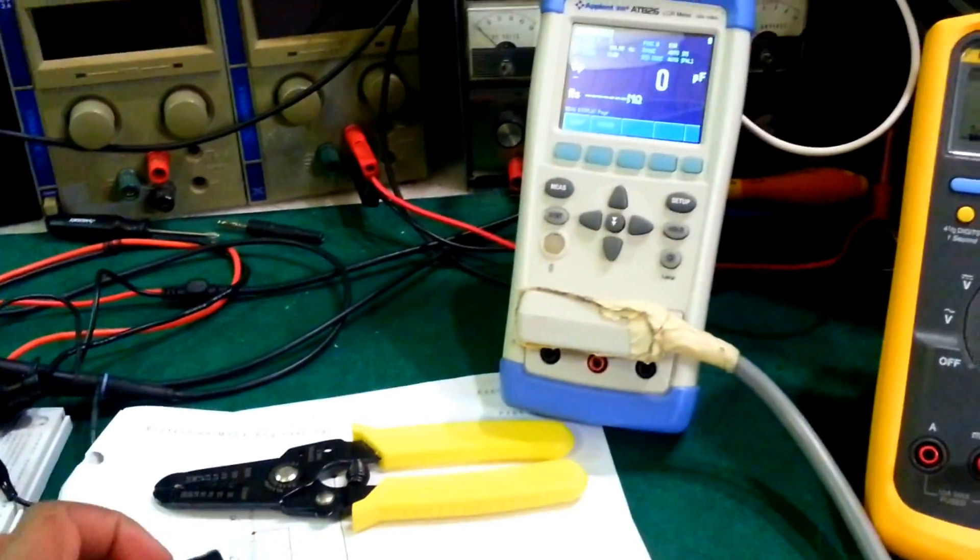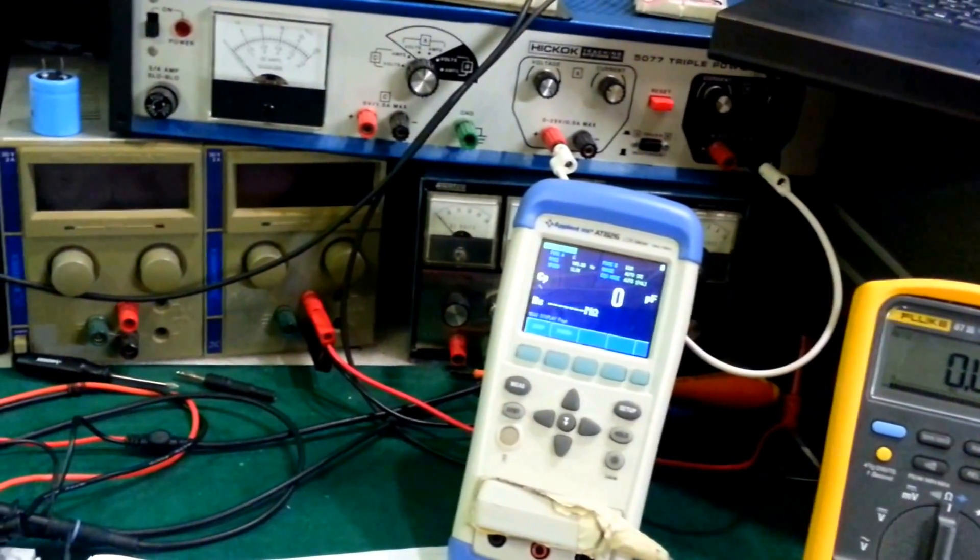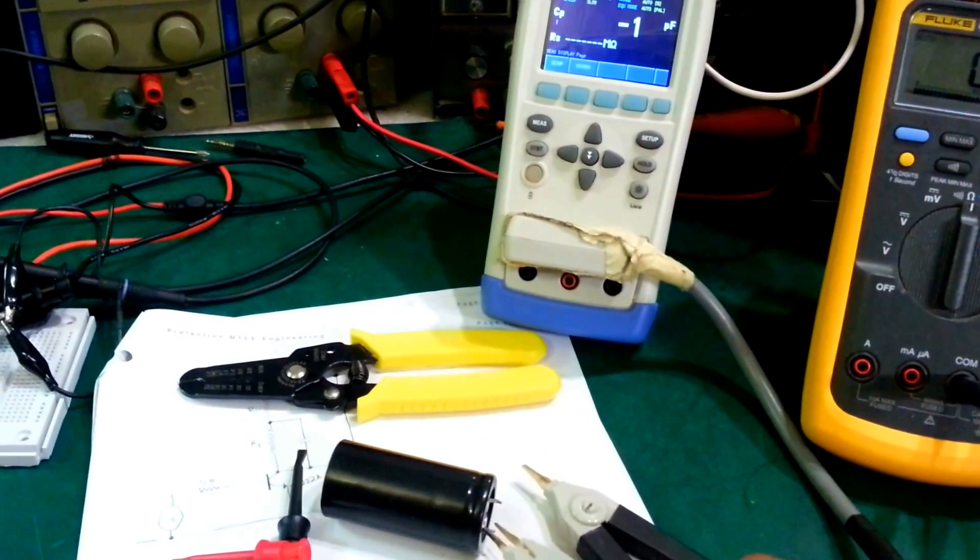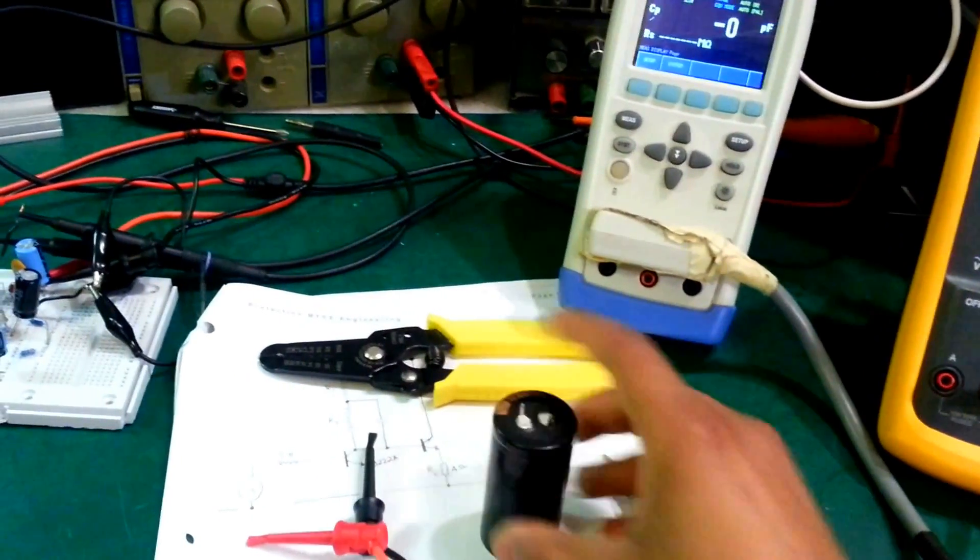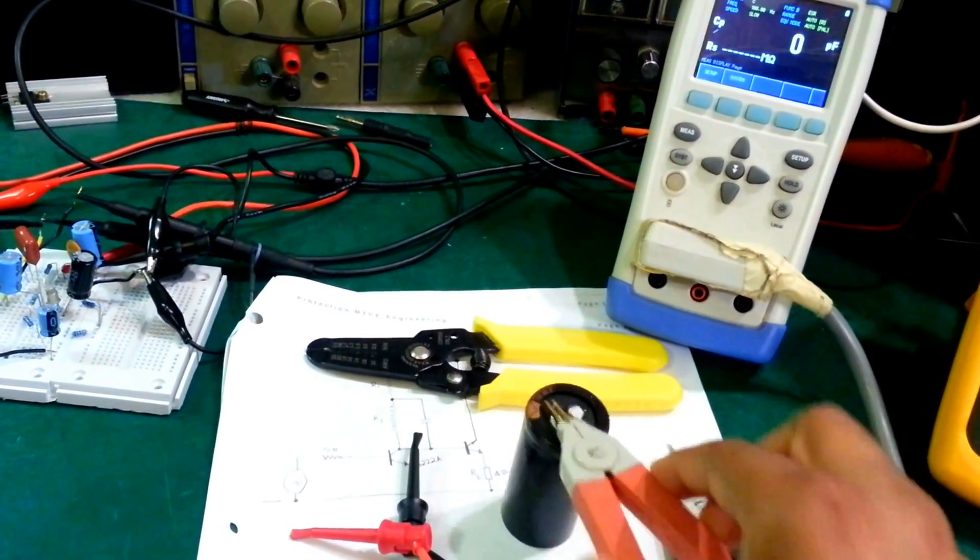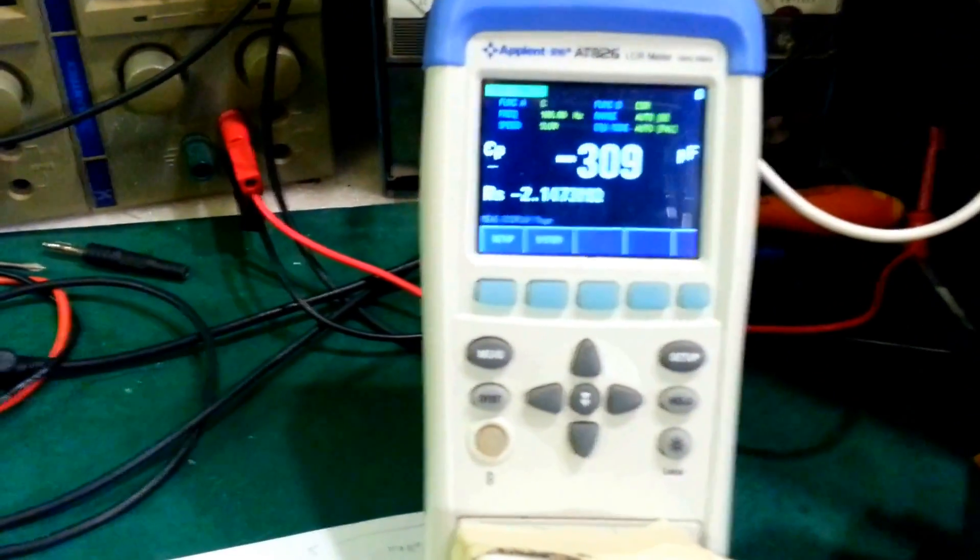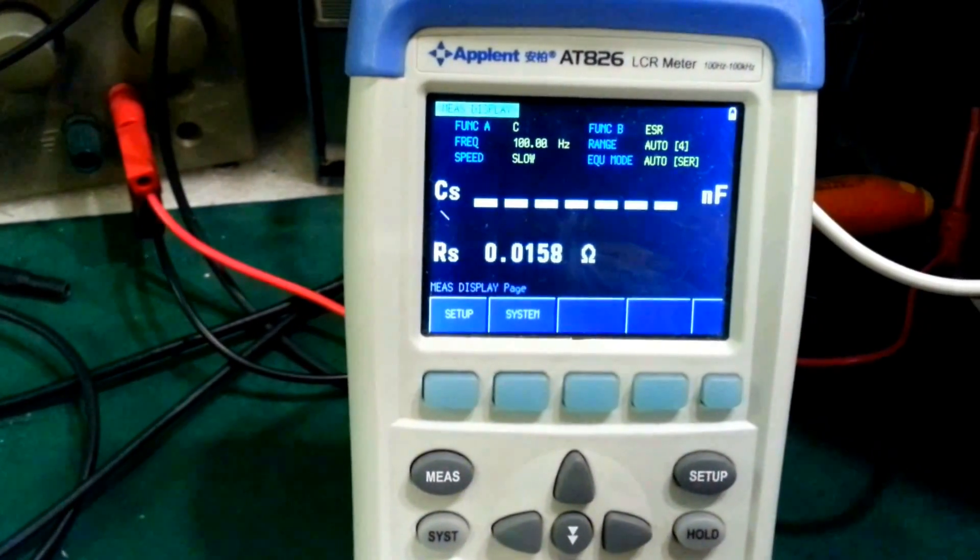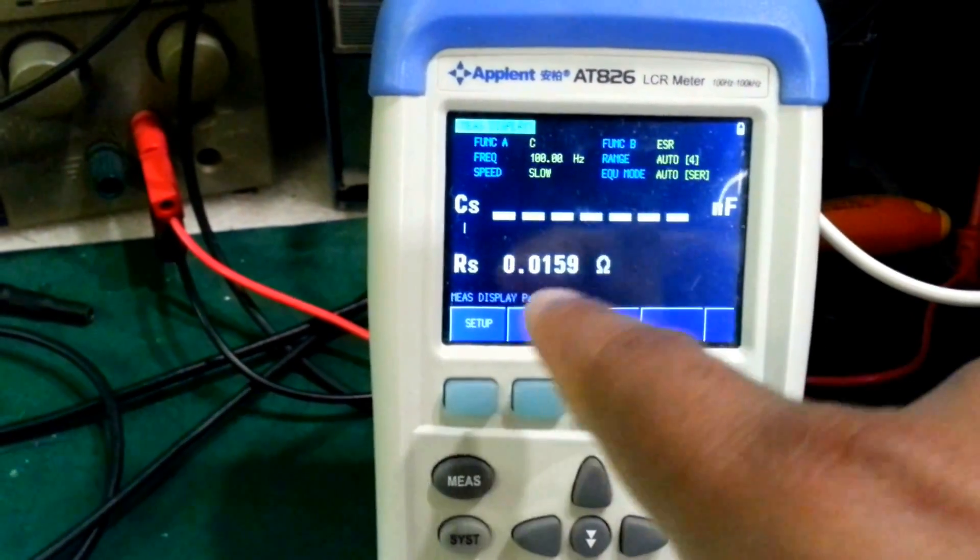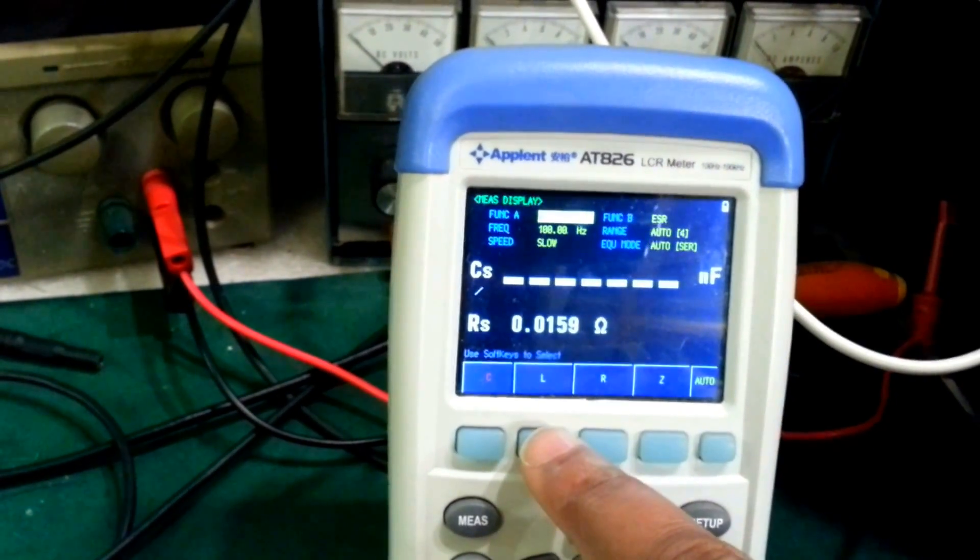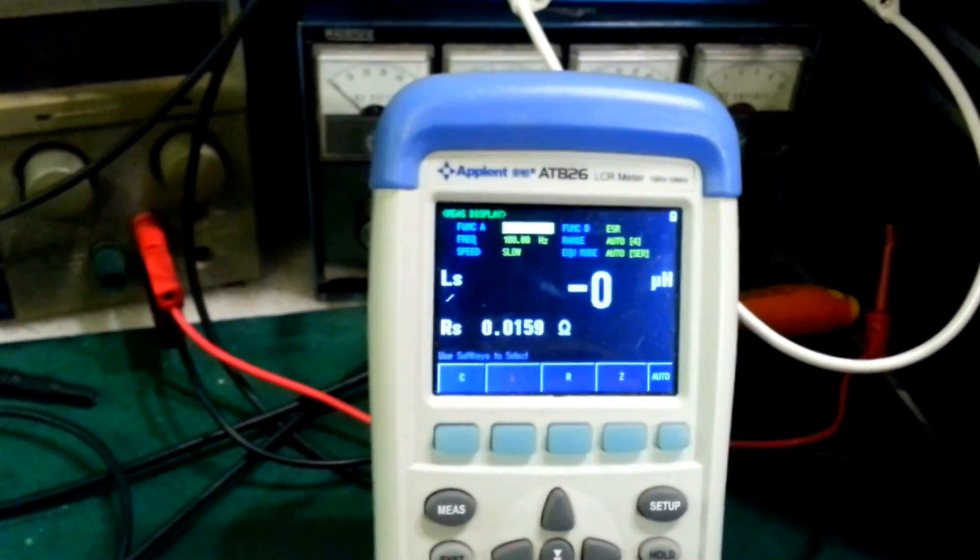Even my Hyundai LCR meter reads short. As you can see on the capacitance range it doesn't read anything, but the ESR of the capacitor, we read basically a short as you can see and the value is zero. If I change it to inductance to make sure that it's actually reading a short, you can see that it's zero microhenrys. This capacitor is no good. If you read resistance directly then you can see RS is 0.0159 ohms.